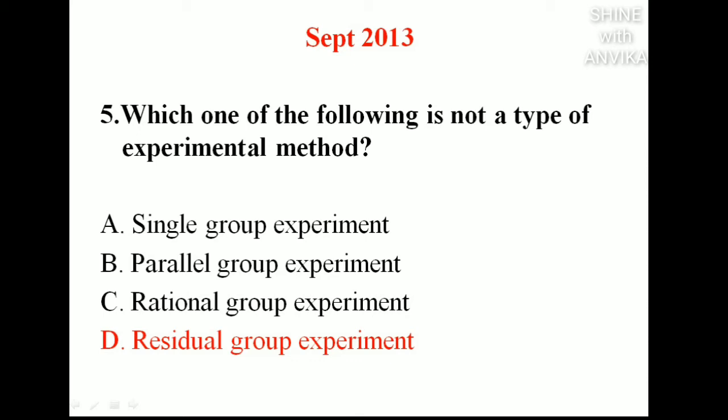In a rational group experiment, participants first predict a hypothesis and then perform an experiment to verify whether it is true or not. However, residual group experiment is not a type of experimental method — it belongs to residual study, where we find the remainder from an actual value. For example, if the expected value is 10 and the result is 8, the residual value is 2. So the correct answer is residual group experiment.